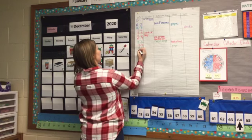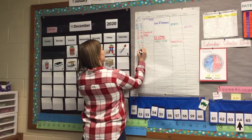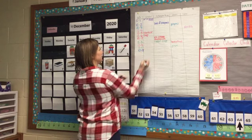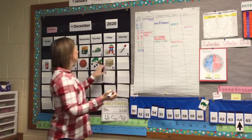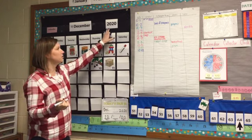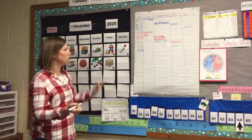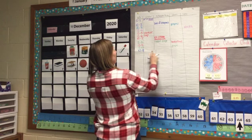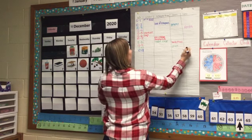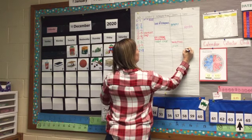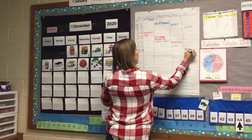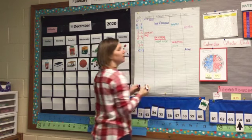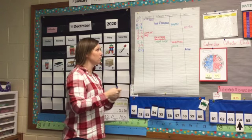So we can add the box to our calendar chart here. We can say today is 12-11, December 11th, 2020. And our box is a cube, so I'm just going to write box in the cube category.